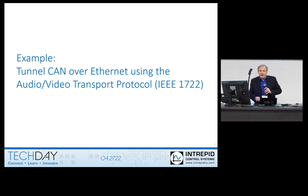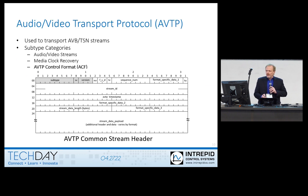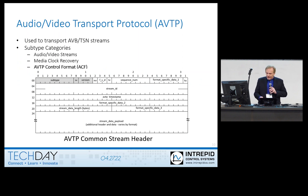The example I'm going to use today for Ethernet to CAN is a gateway that tunnels CAN over Ethernet using what's called Audio Video Transport Protocol, AVTP — a protocol defined in IEEE 1722. As the name suggests, it's a transport protocol used for AVB and TSN streams, so that's audio/video streams or time-sensitive streams.